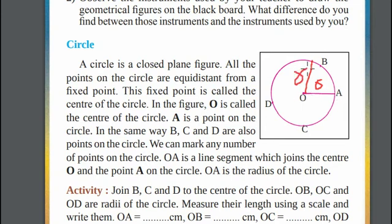OB is also the length of radius. You can just consider the length of OA as the radius of the circle.